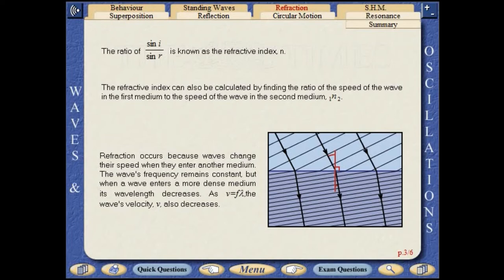Refraction occurs because waves change their speed when they enter another medium. The wave's frequency remains constant, but when a wave enters a more dense medium, its wavelength decreases. As velocity equals frequency times wavelength, the wave's velocity also decreases.